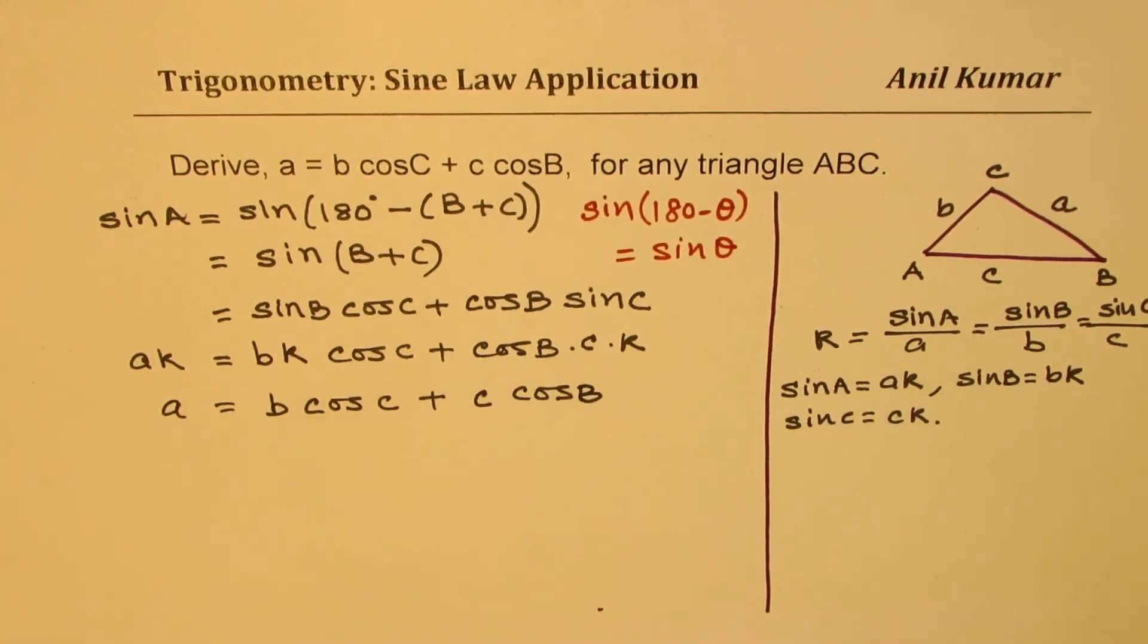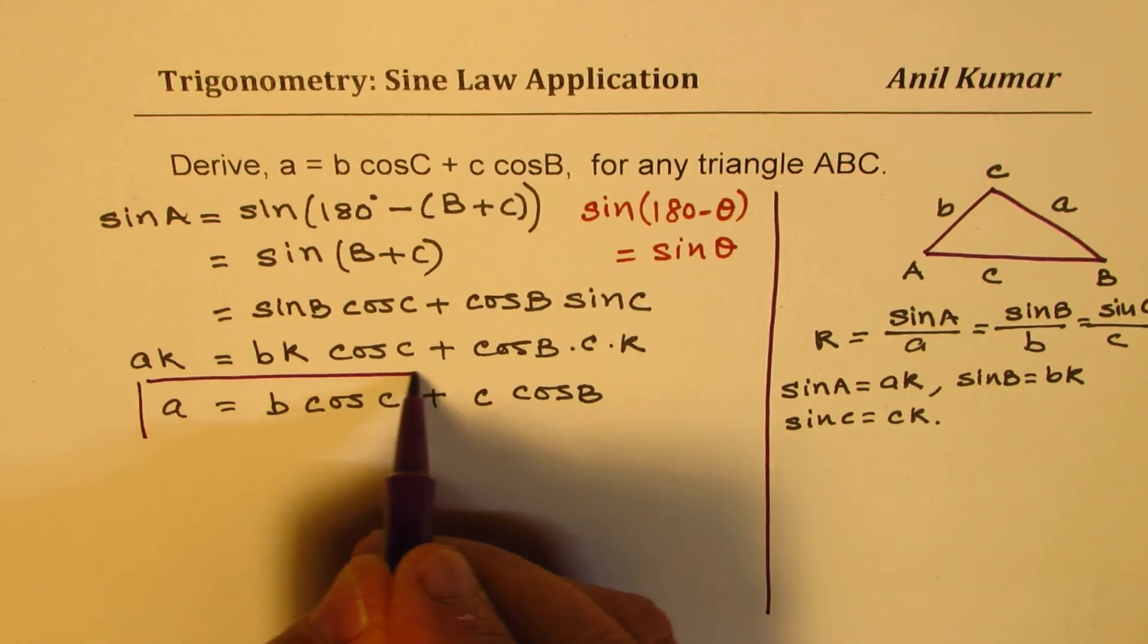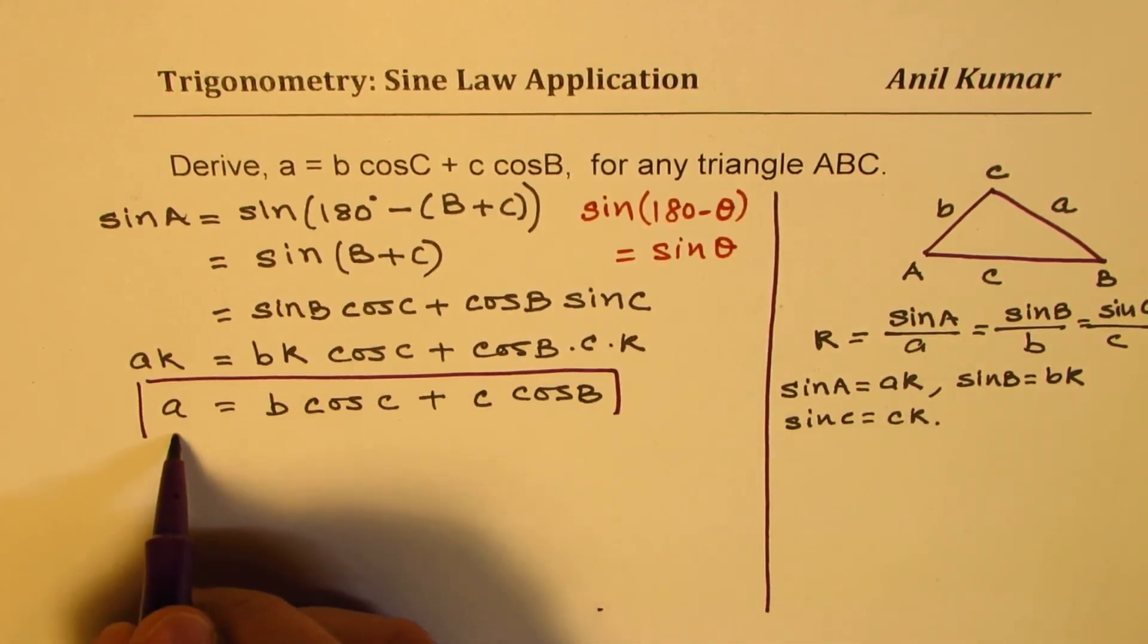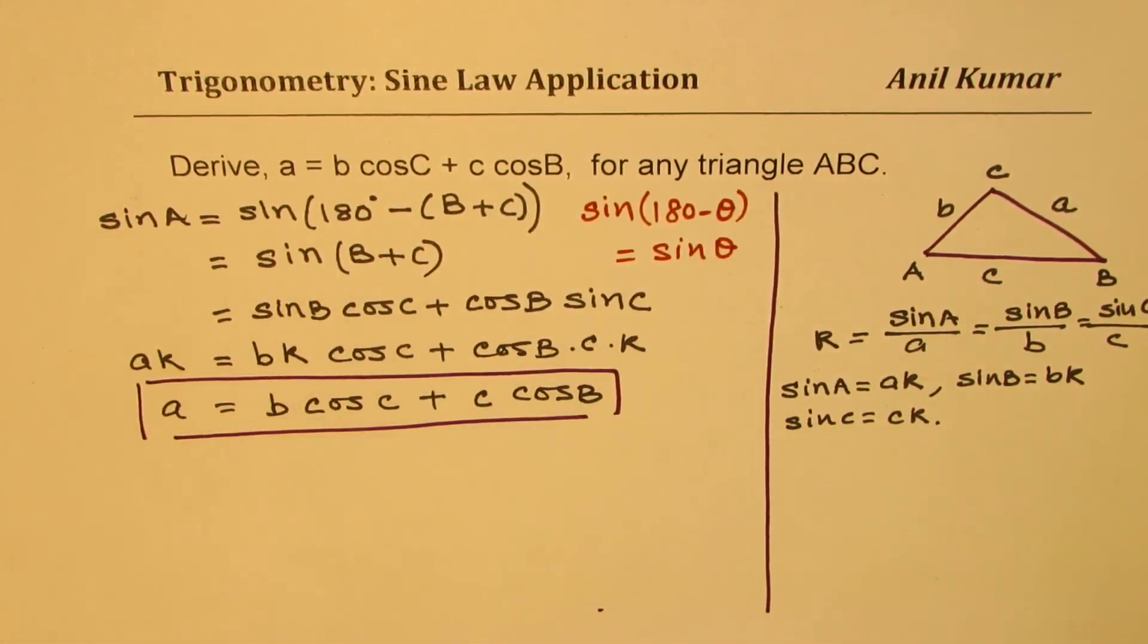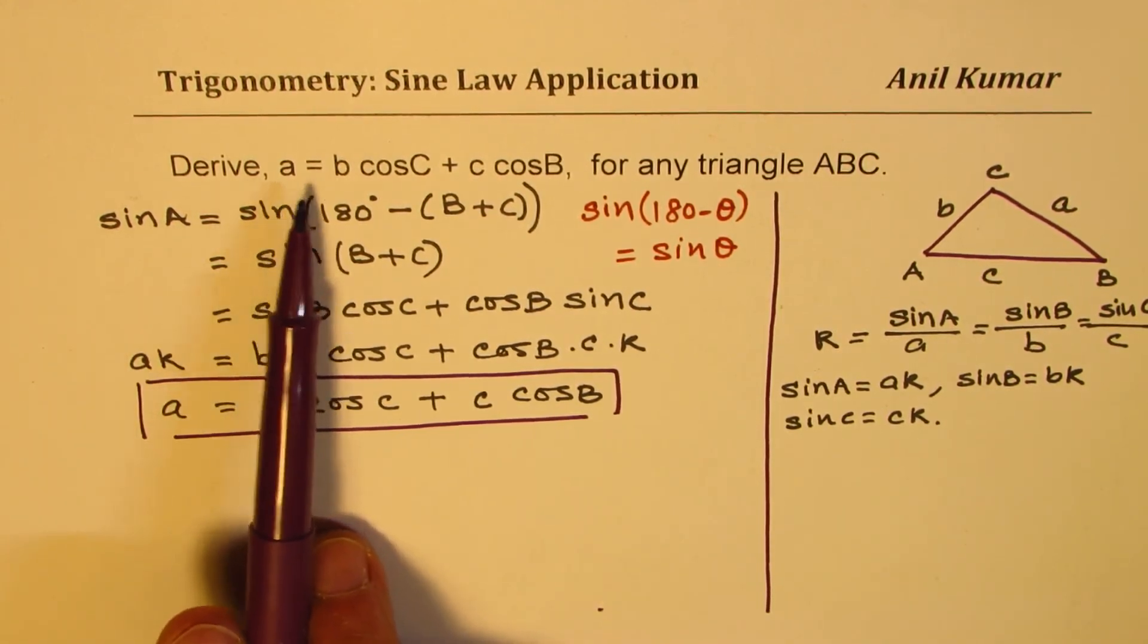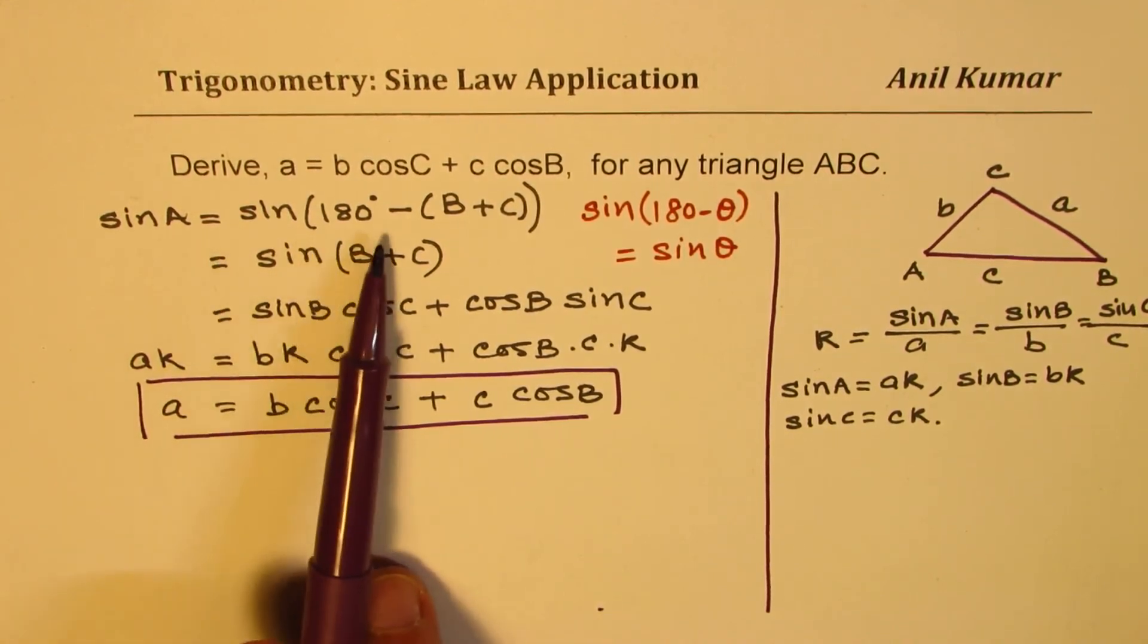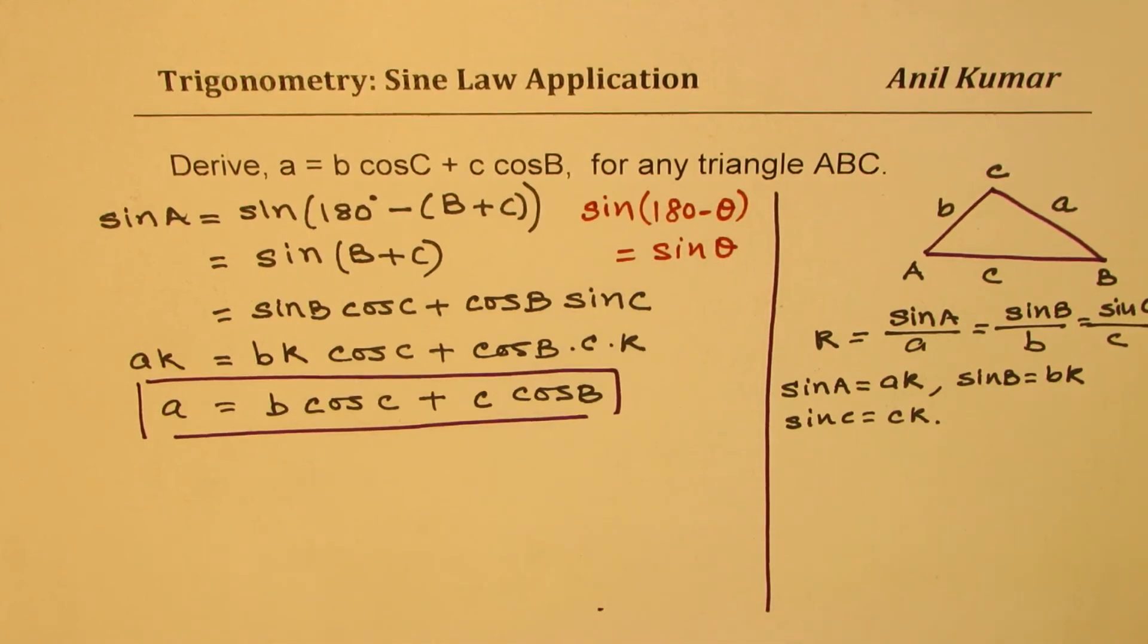So that is how you could actually derive the particular expression. So we get what was required, which is a equals to b cos C plus c cos B. Do you see how it can easily be derived from this sine law? So the trick here is to write any one of these angles, since we are saying a equals to, so angle A as 180 minus the sum of other two to get the expression.